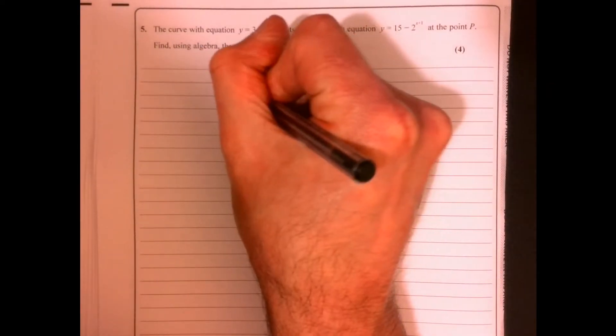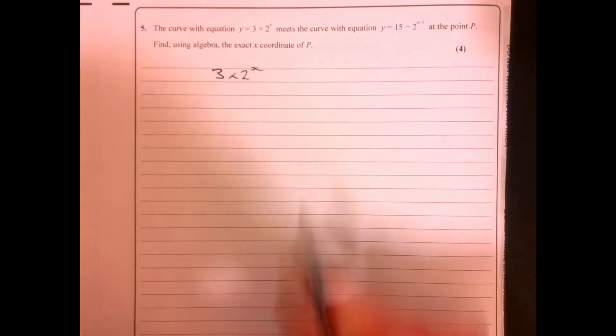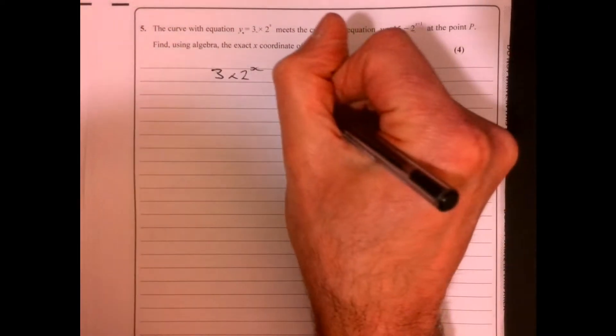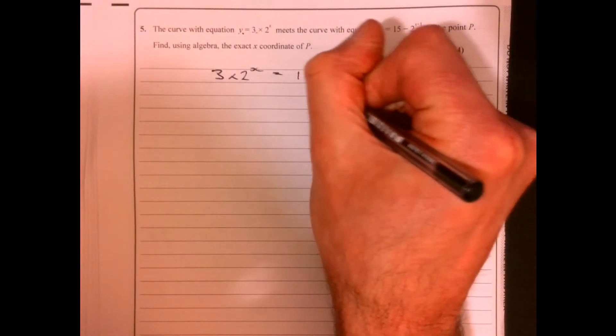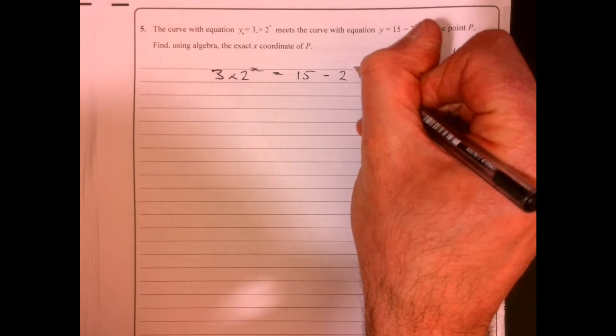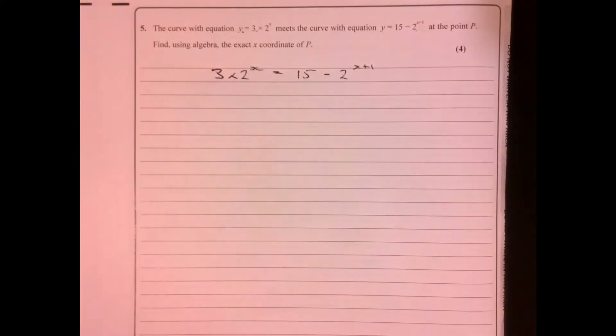Question four. A lot of people struggle with this question. I suppose it just looks a little scary. We've got y equals. So the first thing that we're going to write down is we're just going to say, well, we know that these two things must be equal to each other. Right.